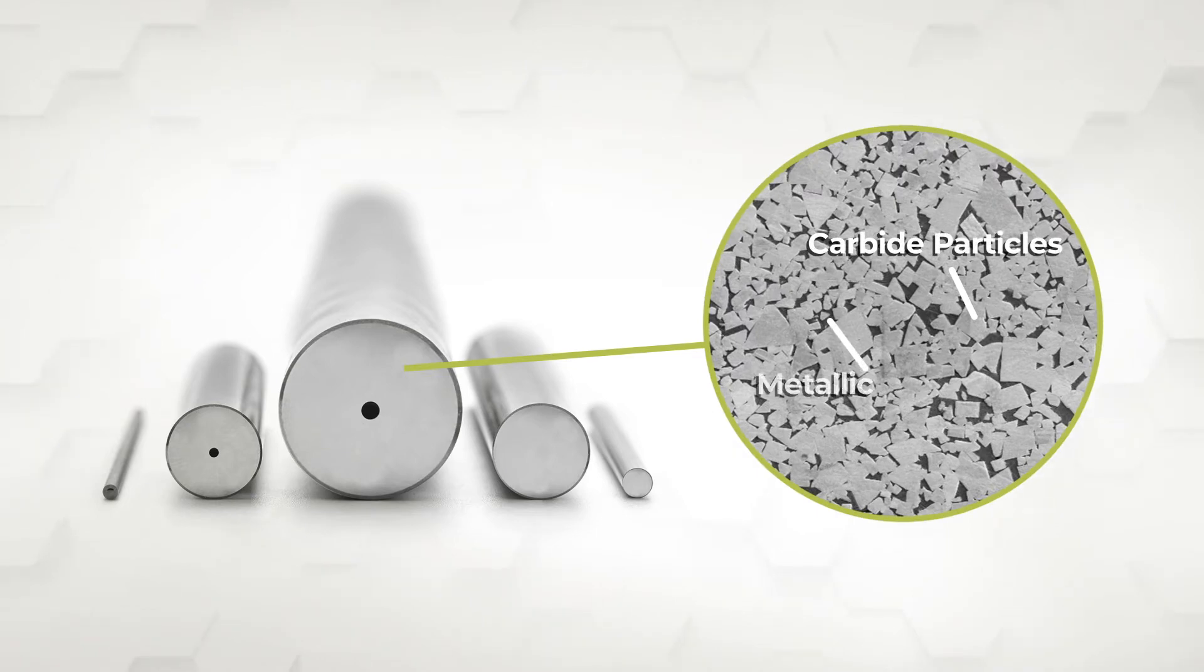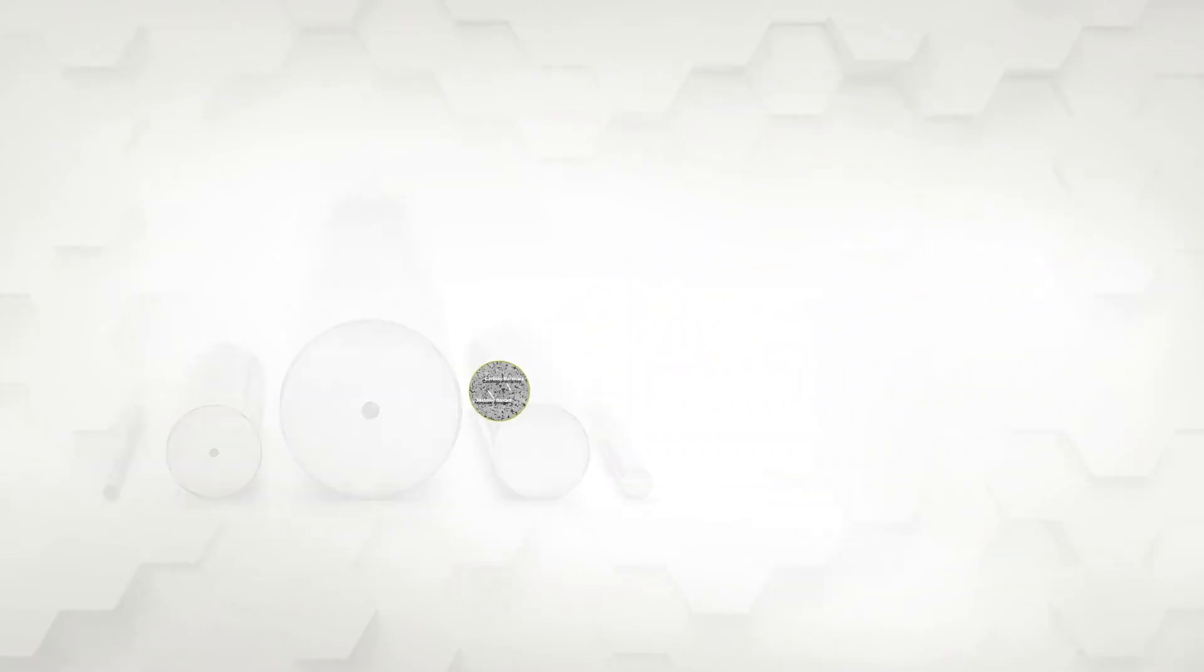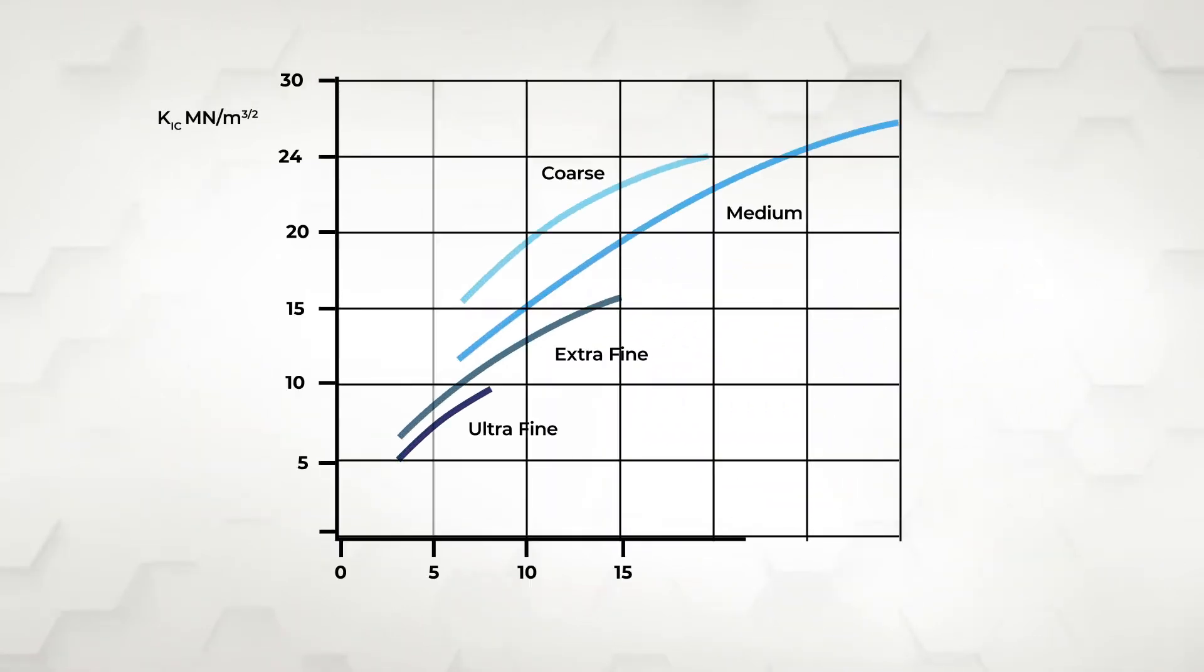However, different cemented carbides show large differences in toughness due to their microstructure. This microstructure can be optimized to accommodate the demands of different applications.